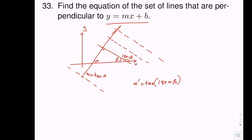We also know that since the sum of angles in a triangle is 180 degrees, we have alpha plus beta plus 90 equals 180. Therefore alpha plus beta equals 90 degrees, and beta equals 90 minus alpha.